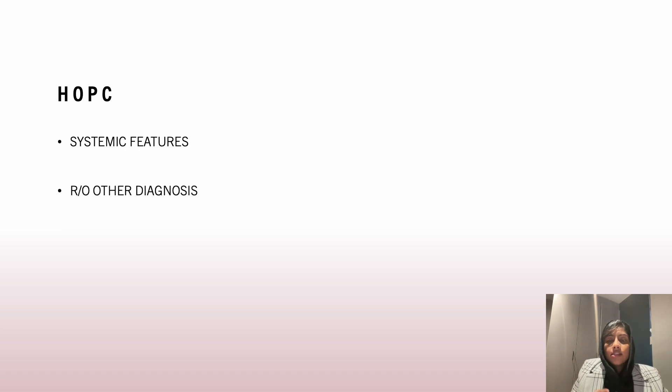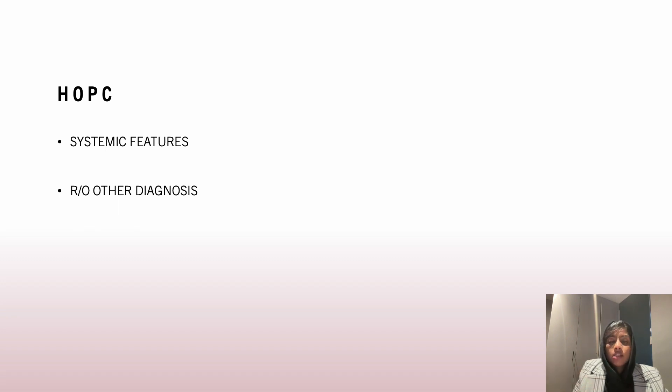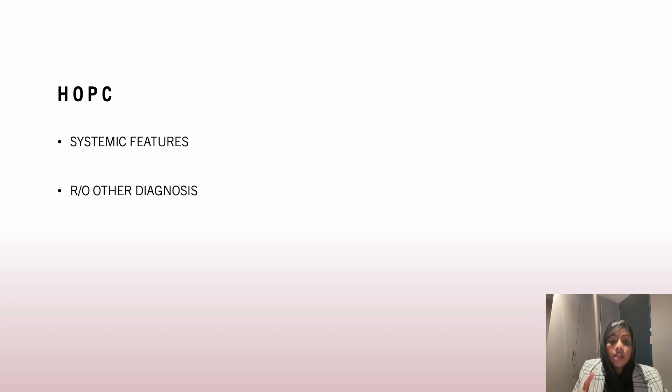The next step is asking questions to rule out other diagnoses. For example, when considering psoriasis, another scaly condition to consider is subacute cutaneous lupus erythematosus (SCLE). To rule out SCLE, you can ask about oral ulcers, photosensitivity, arthritis, and arthralgia. These relevant negative histories will help you rule out other possible differential diagnoses.